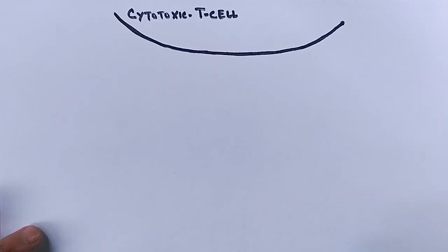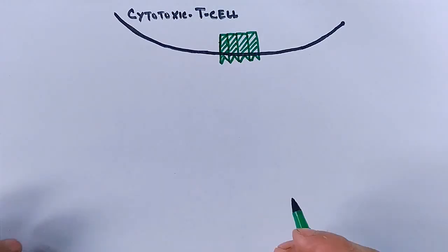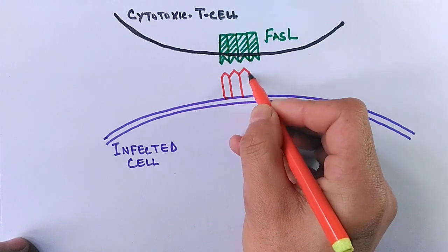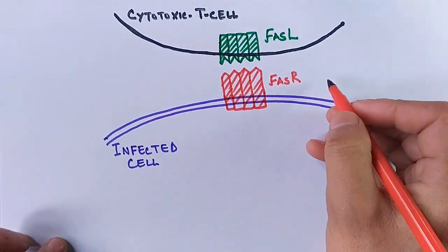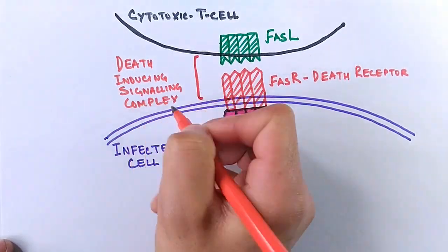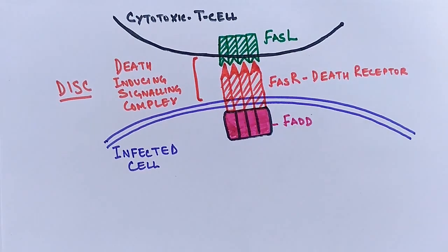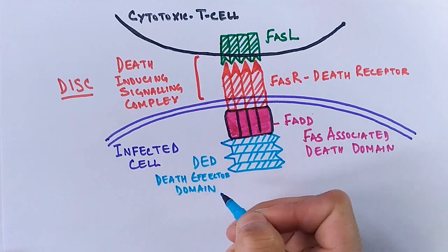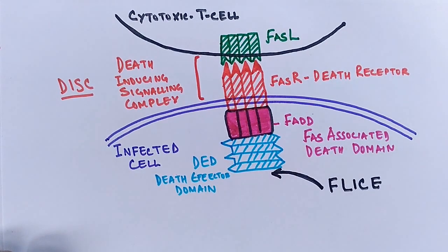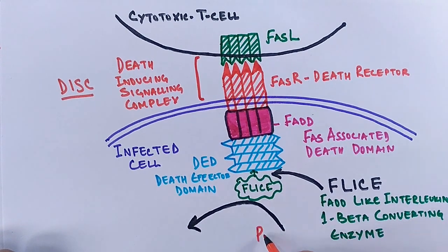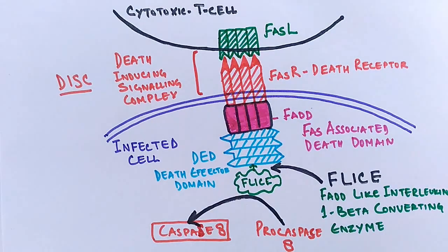In the diagram, we can see the cytotoxic T cell has FASL (FAS ligand) on its membrane, which interacts with the FAS receptor (death receptor) of the infected cell. The infected cell has the death receptor with FADD adapter bound to it. The interaction between FAS ligand and FAS receptor forms the death-inducing signaling complex, or DISC. To this DISC, DED (death effector domain) is attached to the FADD, which recruits FLICE (FAD-like interleukin-1 beta converting enzyme). This complex converts pro-caspase 8 to its active form, caspase 8, where the cascade starts.